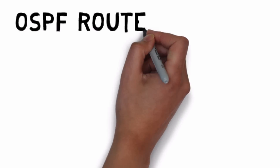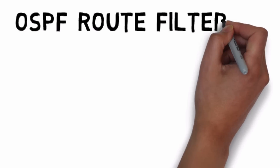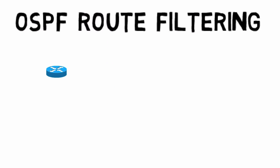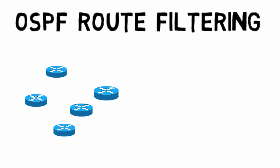In this video, we want to talk about how to do OSPF route filtering. Maybe we want to filter routes from being learned by a router for security reasons — we don't want a router to have reachability to a particular network. Maybe we're trying to limit the number of entries in our IP routing table, or maybe we're trying to prevent a routing loop. The question is, how do we filter these routes?